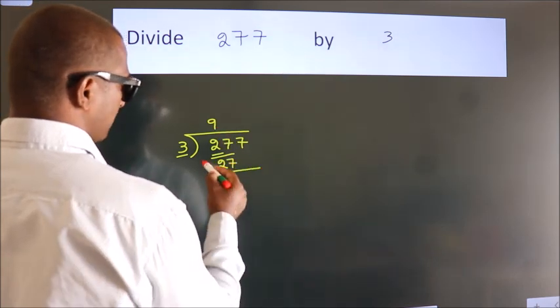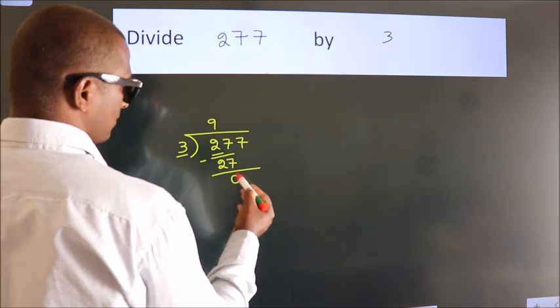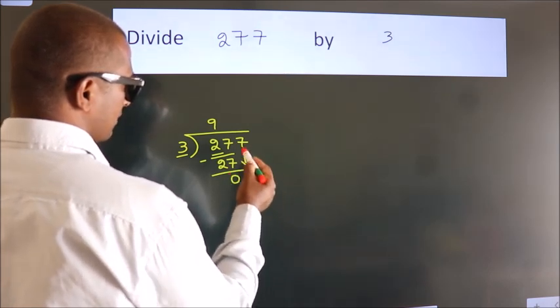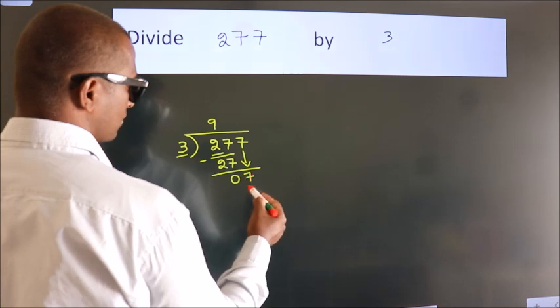Now we should subtract. We get 0. After this, bring down the beside number. So 7 down.